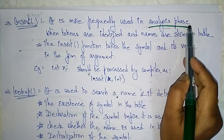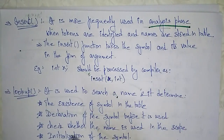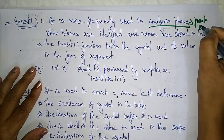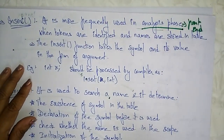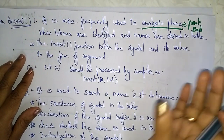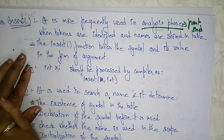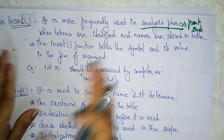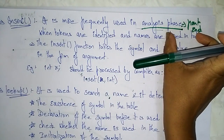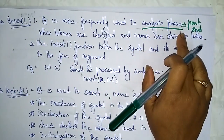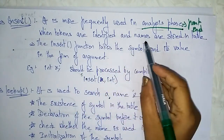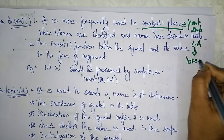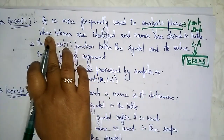The insert function is more frequently used in the analysis phase. The analysis phase is the front end — at the time of writing and compiling the program, the complete program information is stored in the symbol table. The insert function is more frequently used in the analysis phase when tokens are identified and names are stored in the table. The first phase is the lexical analyzer, which generates tokens.